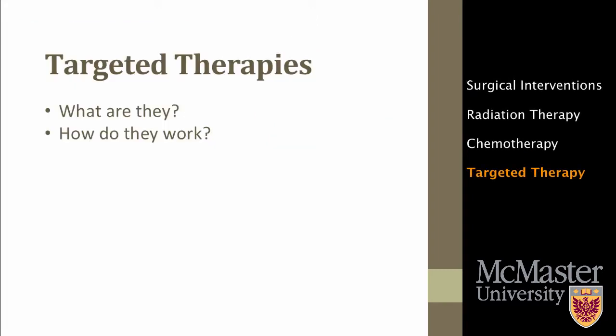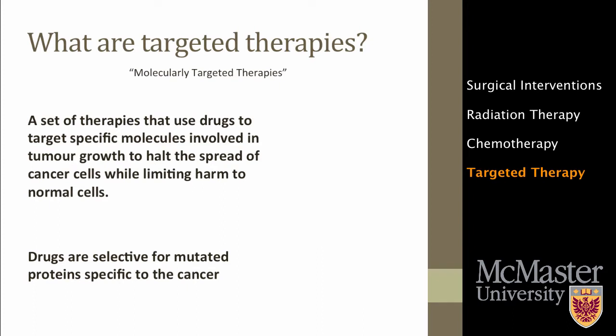Targeted therapies are a relatively newer type of lung cancer treatment that specifically targets cancer cells. Targeted cancer therapies are a set of drugs that block the growth and spread of cancer by interfering directly with mechanisms that involve tumor progression. The goal for targeted therapies is to directly treat the cancer cells while sparing normal cells. These therapies often come in the form of a pill that can be taken daily. This form of therapy is selective for mutated proteins specific to the tumor, explaining the targeted effects.